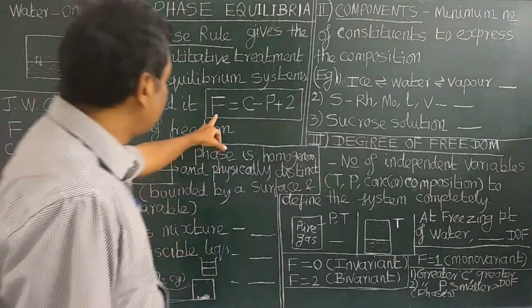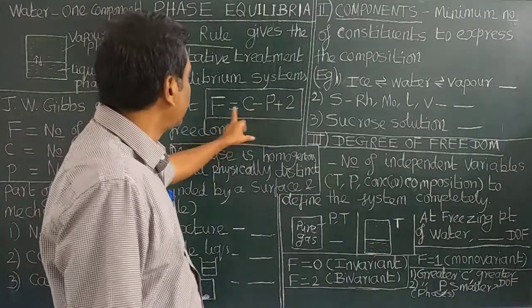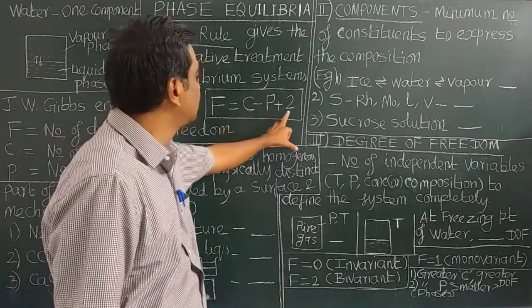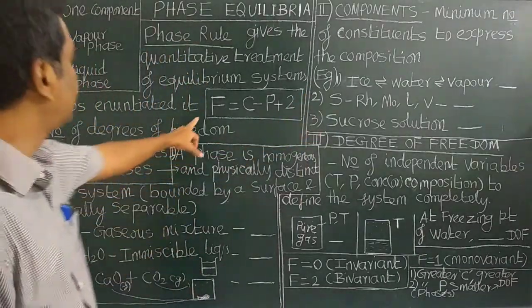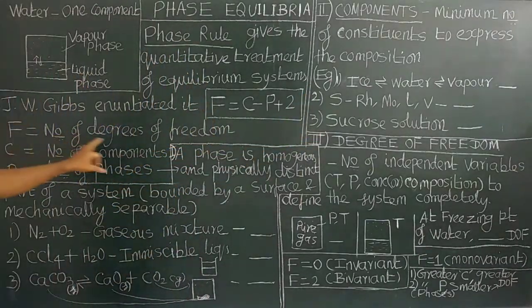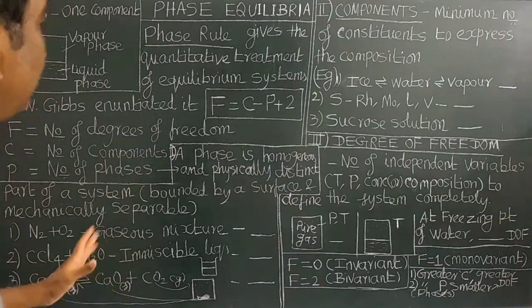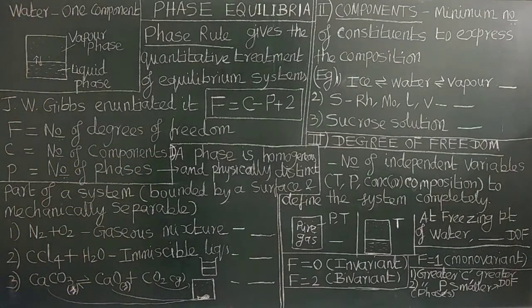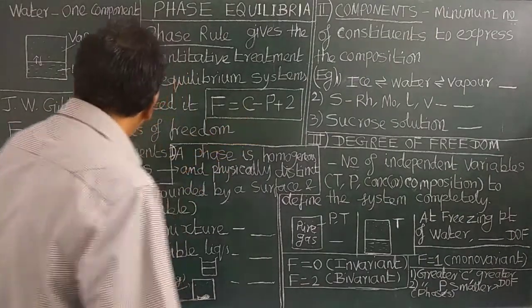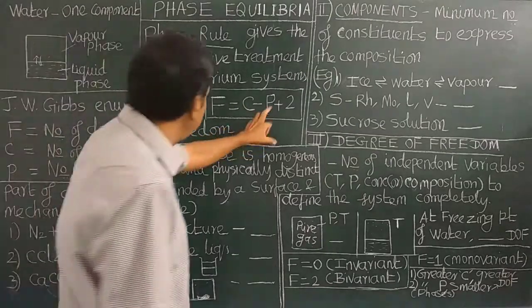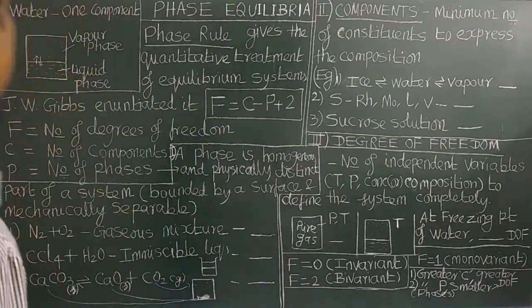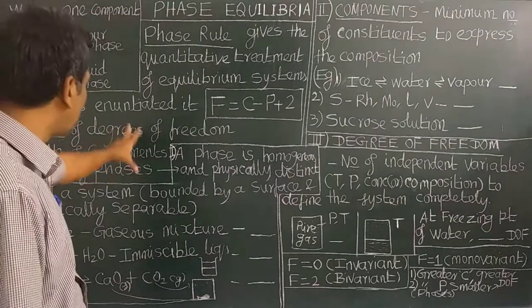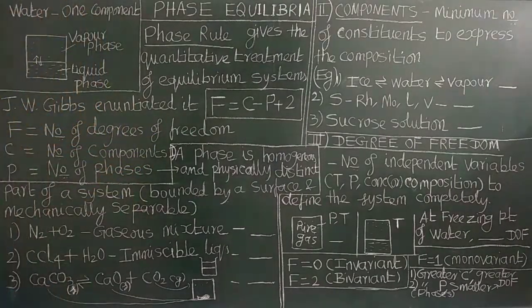J.W. Gibbs thermodynamically derived the phase rule: F equals C minus P plus 2. What is F? F is the number of degrees of freedom. C is the number of components and P is the number of phases. There are three important terms to define.